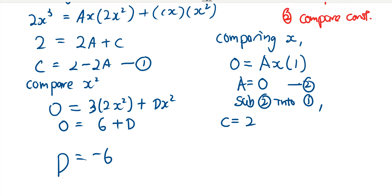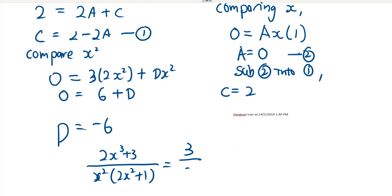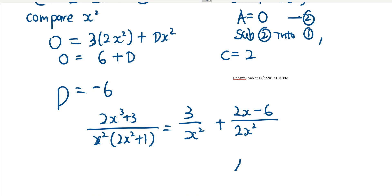So now I have all my ABCs and D, I can say that 2x cubed plus 3 over x square bracket 2x square plus 1 is equal to - a is 0, so I do not write. B is 3, 3 over x square plus cx plus d over your denominator 2x square plus 1, and that's your answer.